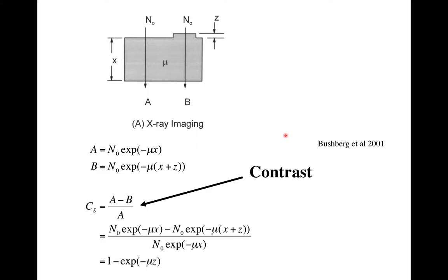Going back to our local contrast definition — the fractional change in signal compared to background — when you assume the signal through the object follows the exponential attenuation equation and calculate local contrast as that fraction, you get a very simple formula. That's why it makes sense in projection X-ray imaging to define contrast this way — it simplifies to just being dependent on thickness. However, when determining whether we can detect a bump with respect to background, we measure the contrast-to-noise using the RMS.